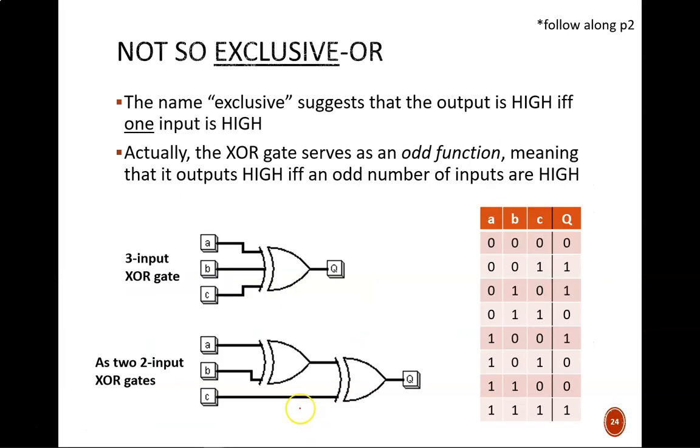All right. Last slide for today. Here, we see a more accurate definition of exclusive OR. Grammatically, the name should mean that one and only one true input produces a true output. In reality, an XOR operation works as an odd function. This means it will output one if there are an odd number of ones on the inputs.